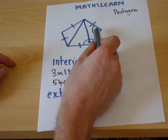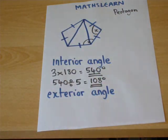108 degrees for each of the five angles. So that is one way to find an interior angle.